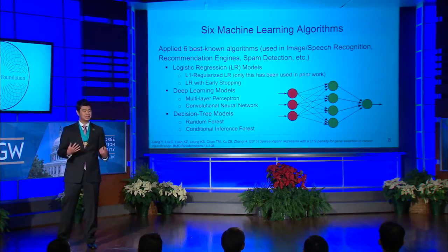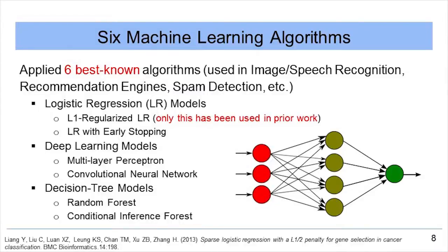We applied the six best-known machine learning algorithms, which have been used successfully and extensively in many other fields such as image and speech recognition. These six algorithms can be broadly classified into three types: the two logistic regression models — L1 regularized and early stopping — the two deep learning models — multi-layer perceptron and convolutional neural network — and two decision tree models — random forest and conditional inference forest.